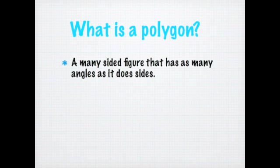What is a polygon? We should have a pretty good idea of what a polygon is based on the research that we've been doing with the vocabulary. A polygon is a many-sided figure that has as many angles as it does sides. You also know there is some other criteria: it has to be flat, all the sides have to connect all the way around, and the sides can't overlap.